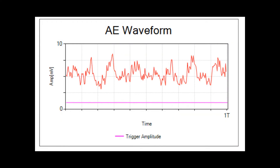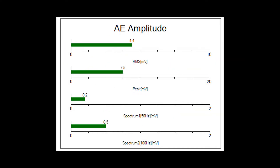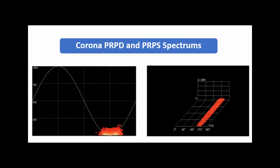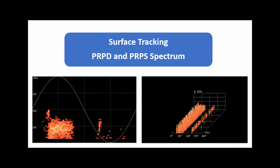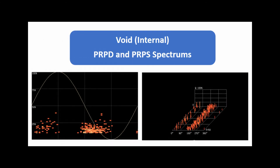The core issue for analyzing the severity of a PD signal is first determining the PD type. PMDT utilizes PD type determination techniques based on time domain spectrums. Each PD type has typical characteristics which are useful in determining the PD's developing progress and severity level.